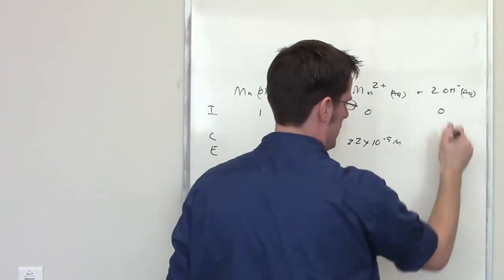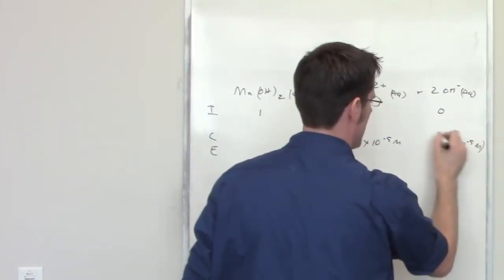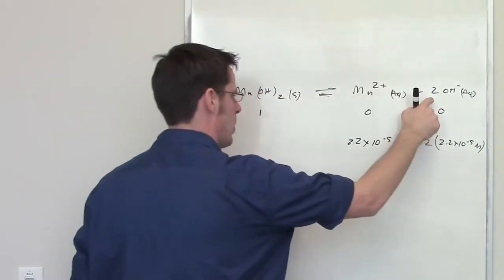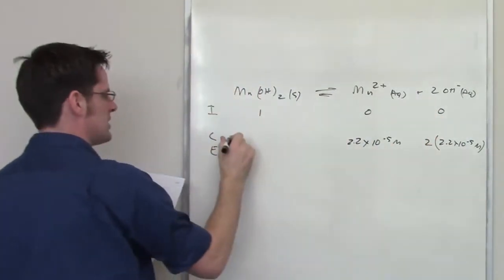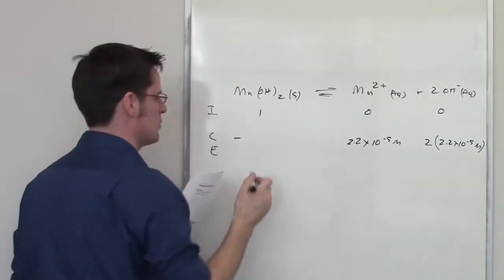I also have the same molar solubility for this thing, 2.2 times 10 to the negative fifth molar, but I have to multiply it by two because there are two molar equivalents. Now, by extension, the amount of manganese hydroxide molarly, I'm not sure if that's a word, is going to decrease by that same amount.